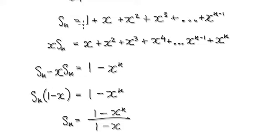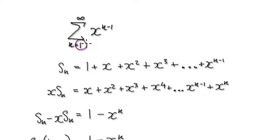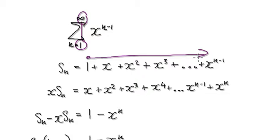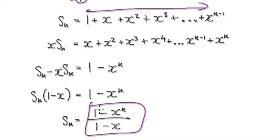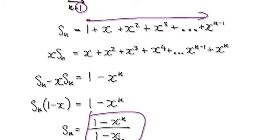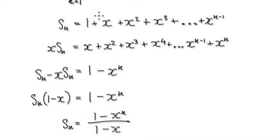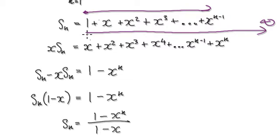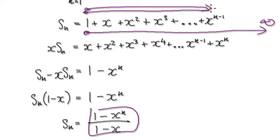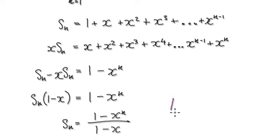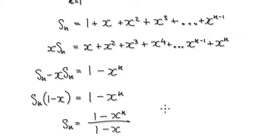Remember, we are trying to sum up from 1 all the way to infinity. To do that, we consider summing up the first n terms. S_n here represents summing up the first n terms, and we've got a formula for that. But we want to sum up everything all the way to infinity, so we take the limit as n heads towards infinity.